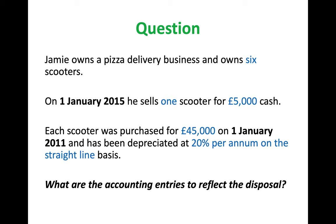Let's look at a question together to illustrate the theory. Jamie owns a pizza delivery business and owns six scooters. On the 1st of January 2015 he sells one scooter for £5,000 cash. Each scooter was purchased for £45,000 on the 1st of January 2011 and has been depreciated at 20% per annum on the straight-line basis. What are the accounting entries to reflect the disposal?